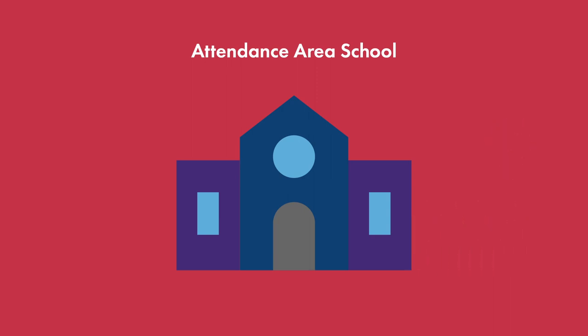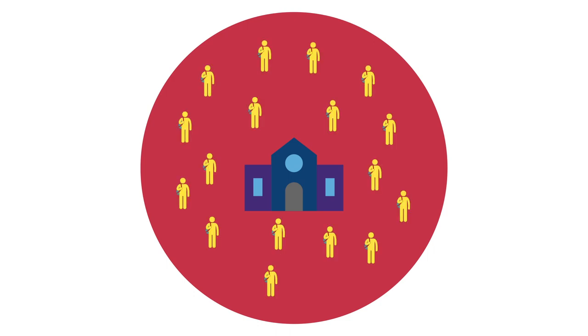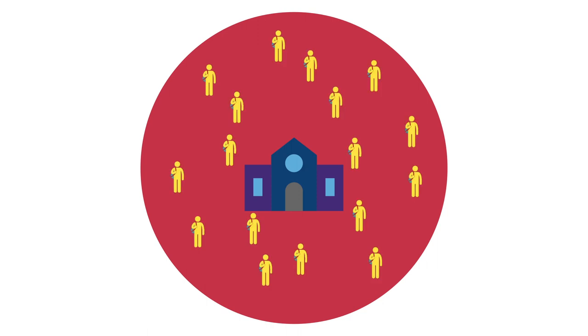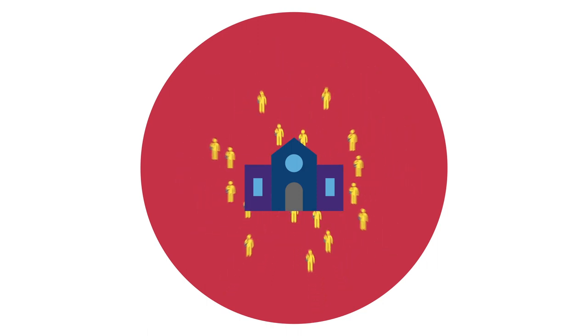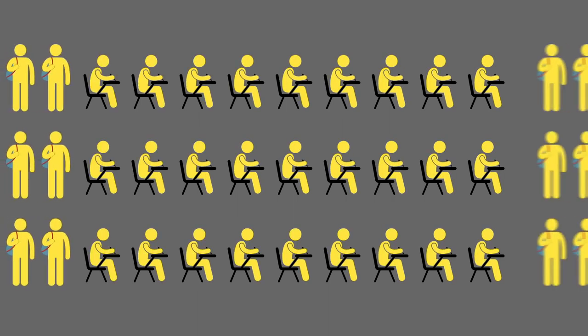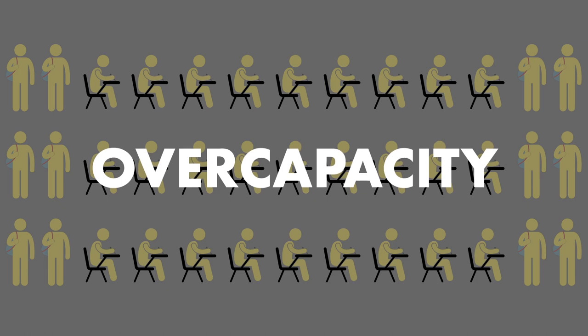Each attendance area school has a boundary, and students within the boundary are assigned to that school. As more students enroll in the district, some schools end up with more students living within the boundary than the space available. When a school has more students than the number of seats it was designed for, the school is considered overcapacity.